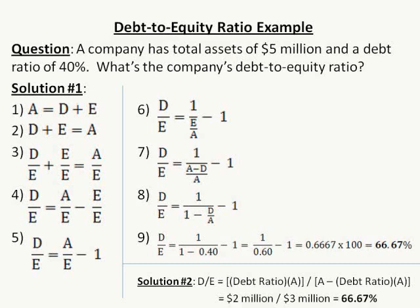With a company with debt in its capital structure, the debt-to-equity ratio will be higher than the company's debt ratio. I'm going to define D as total debt, A as total assets, and E as stockholders' equity. Therefore, the debt ratio equals D divided by A, and the debt-to-equity ratio equals D divided by E.